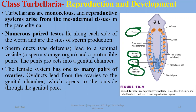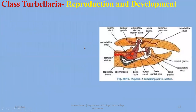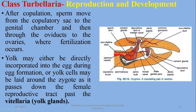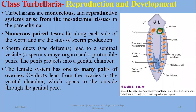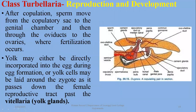The female system has one to many pairs of ovaries. An oviduct leads from the ovaries to the genital chamber, which opens to the outside through the genital pore. During copulation, cross-fertilization takes place. After copulation, sperm moves from the copulatory sac to the genital chamber. Yolk may either be directly incorporated during egg formation in the ovaries, or yolk cells from the vitellaria may be laid around the zygote as it passes down the female reproductive tract.